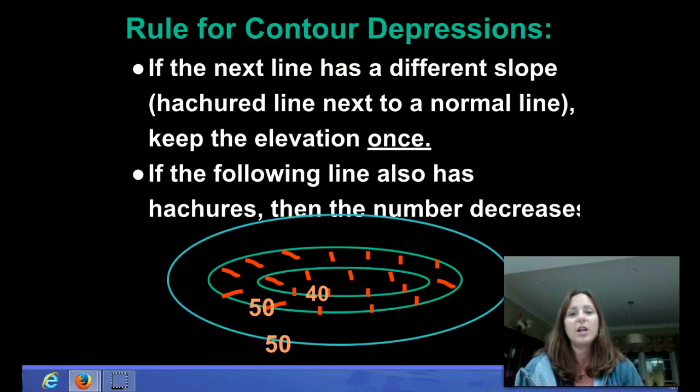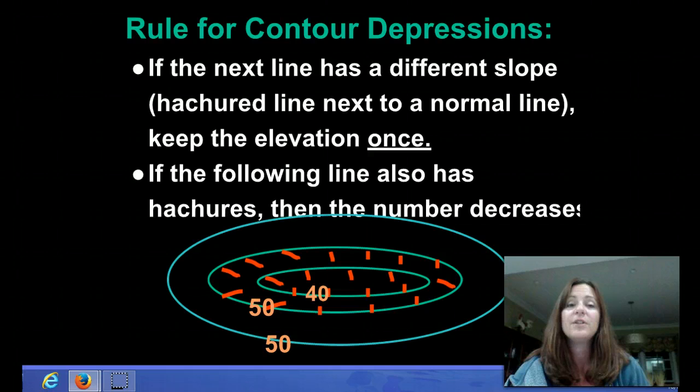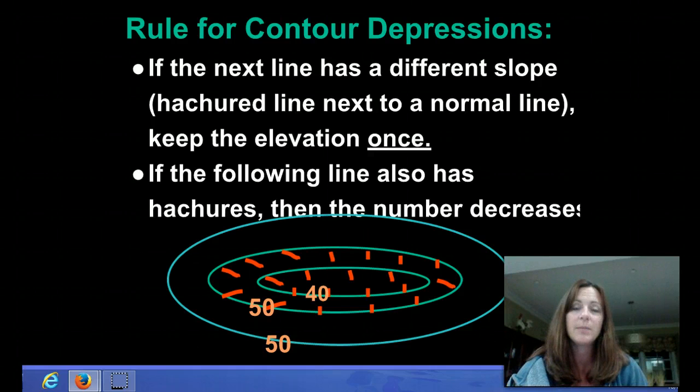Here's a rule for a contour depression. It's important that you write this down. If the next line has a different slope, hatchered line next to a normal line, you keep the elevation the same, or you keep it once. If the following line also has hatcher marks, then you start to decrease the numbers. And I'm going to show you this as an example.